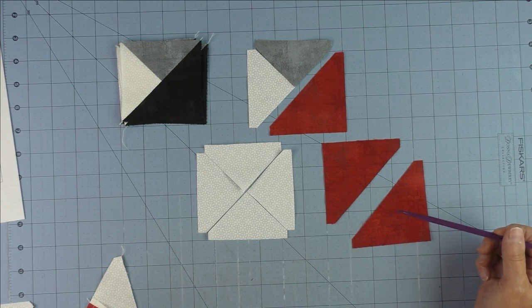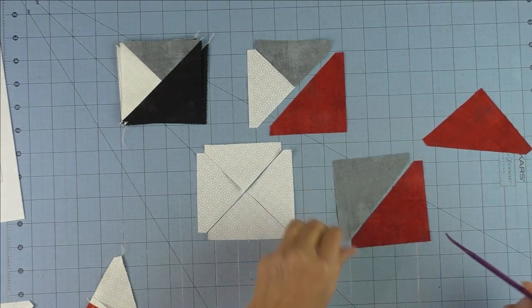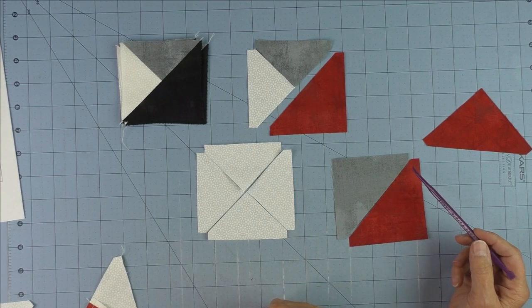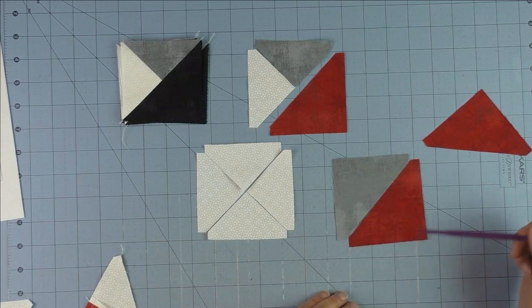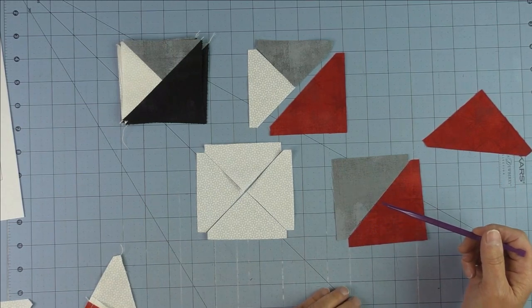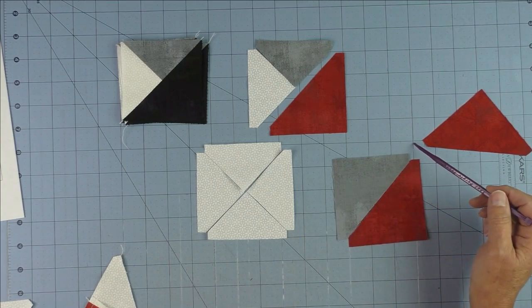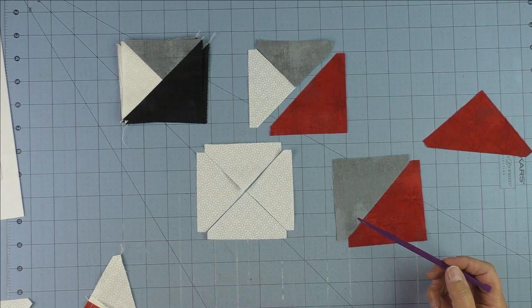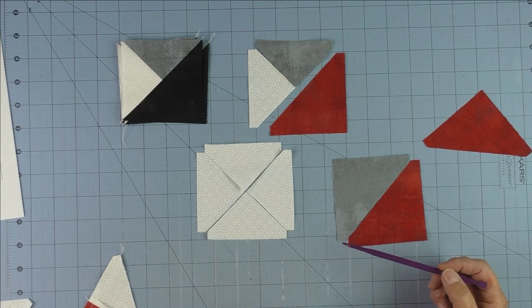Once you sew these two pieces together and then sew the block into a quilt, it'll be three inches finished. When you cut triangles—half square triangles from a square—you add seven-eighths inches to the finished size. That's why this square would be three and seven-eighths.